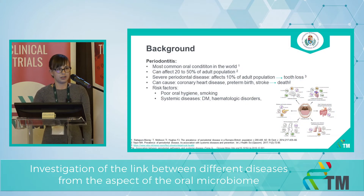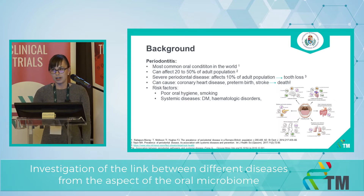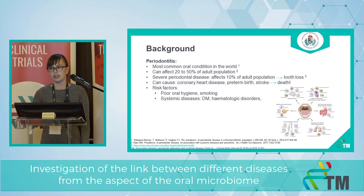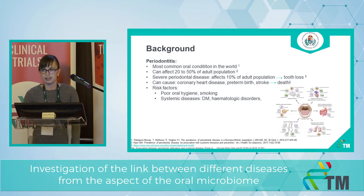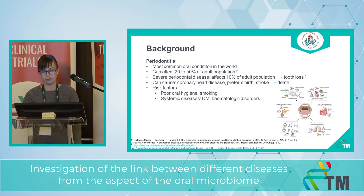According to different epidemiological studies, periodontitis was the most common oral condition in the world. Some kind of periodontal disease can affect 20-50% of the adult population. However, severe periodontal disease can affect 10% of the adult population, which is one of the major causes of tooth loss. Moreover, periodontitis is not only an oral condition, but it can cause coronary heart disease, preterm births, or even stroke.